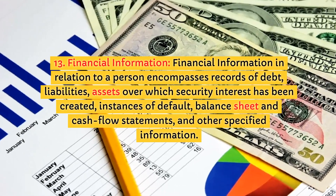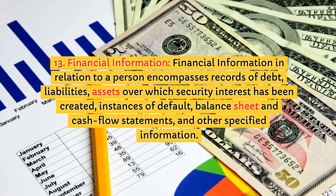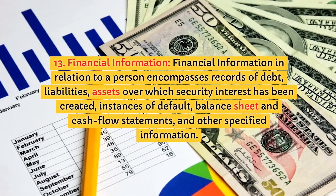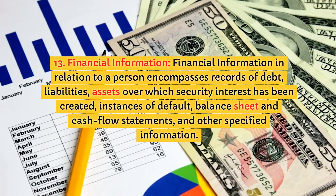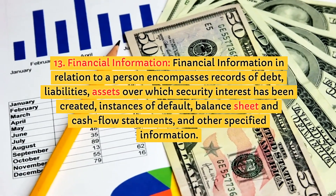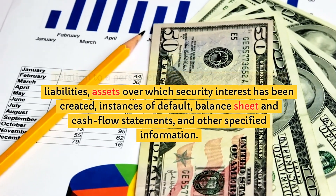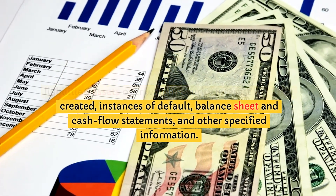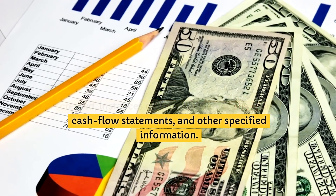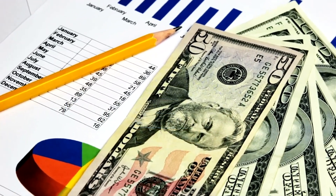13. Financial Information. Financial information in relation to a person encompasses records of debt, liabilities, assets over which security interest has been created, instances of default, balance sheet and cash flow statements, and other specified information.